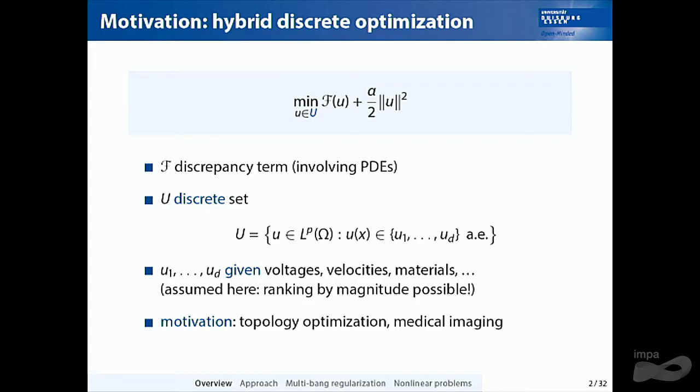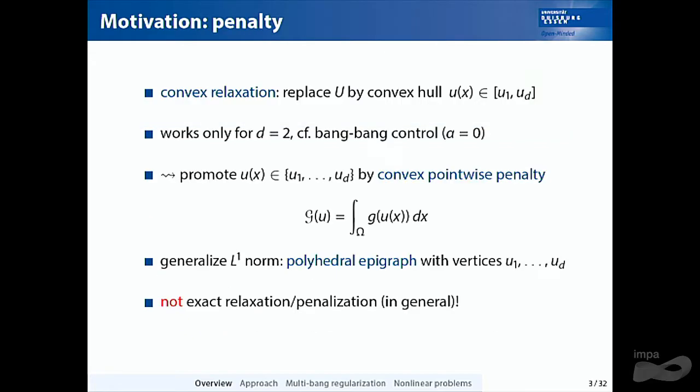You might have a minimizer of this functional but it will not lie in the set. The standard idea is to make it convex — if it doesn't fit, you take a hammer and make it fit. You replace the non-convexity by the convex hull. For a discrete set, the convex hull is just the interval between the extreme values.